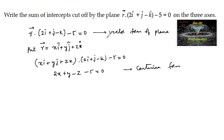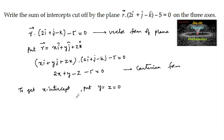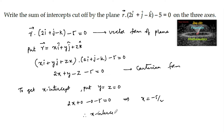To get the intercepts when this plane cuts the three axes, to get the x-intercept put y = 0 and z = 0. In the Cartesian equation we have 2x + 0 - 0 - 5 = 0, which implies x = 5/2. Therefore the x-intercept is 5/2, that is the point on the x-axis it cuts is (5/2, 0, 0).